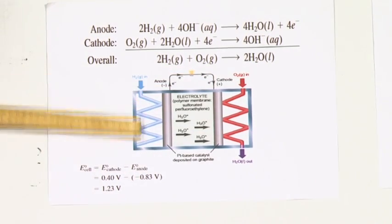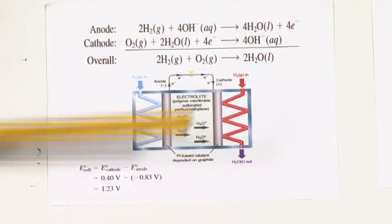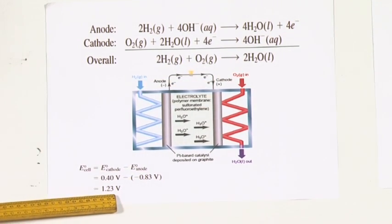You can find out these values from the electrochemical cells. The overall voltage you get is 1.23 volts.